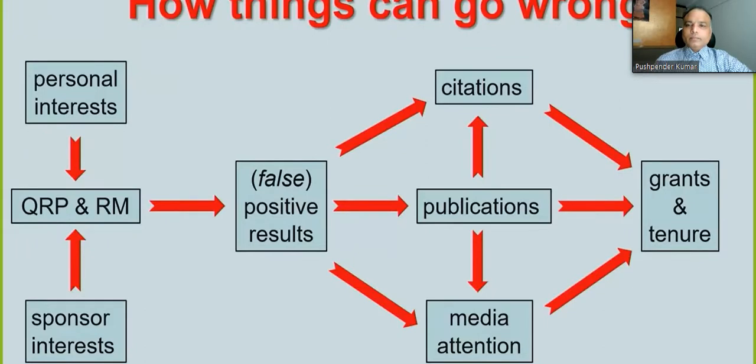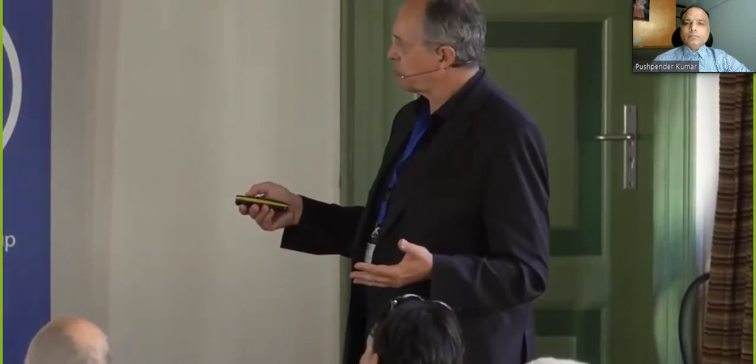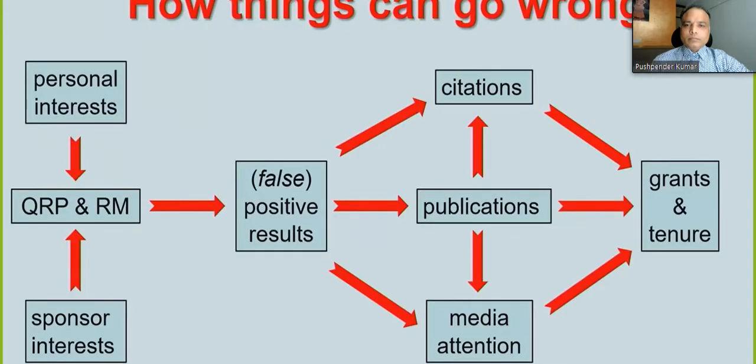All these benefits bring the next grant and hopefully tenure as an academic professor. In a cynical way, cutting corners and questionable research practices can help you get positive results — that's their only purpose. The pressure from personal interest and sometimes sponsor interest makes researchers utilize these forbidden tools to get positive results. These positive results are often false, and because they're false, they're not easily reproducible — that's basically the story in a simple way.